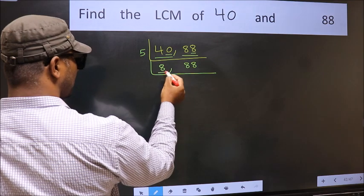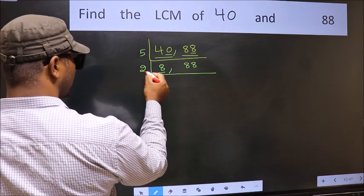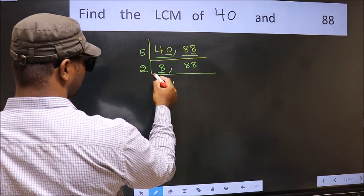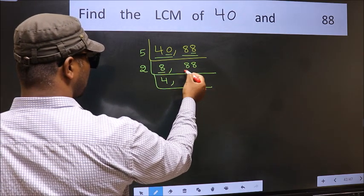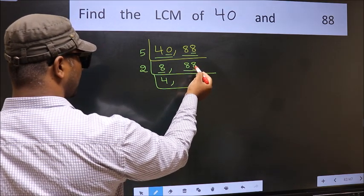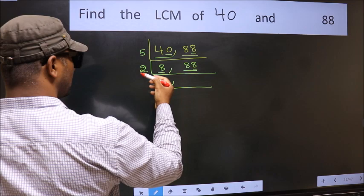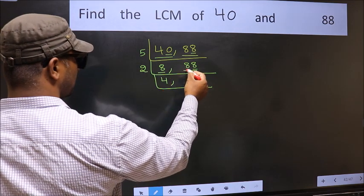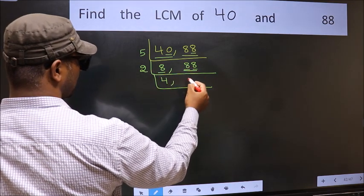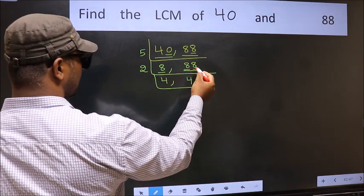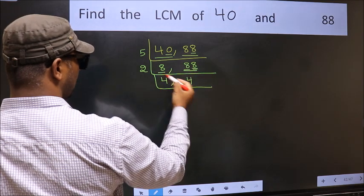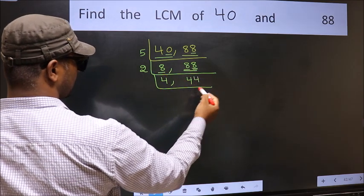Now here we have 8. 8 is 2 fours are 8. The other number is 88. Last digit 8 is even, so this is divisible by 2. When do we get 8 in the 2 table? 2 fours are 8. The other number 8: when do we get 8 in the 2 table? 2 fours are 8.